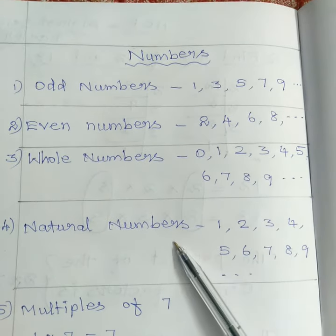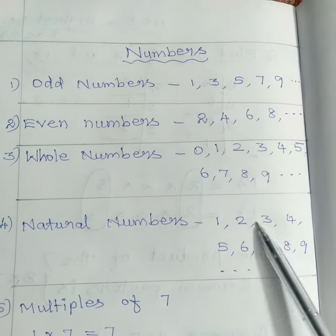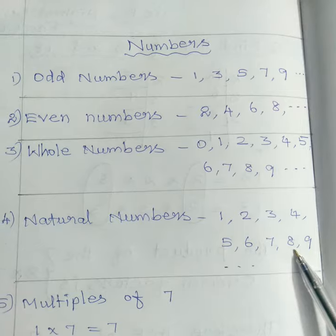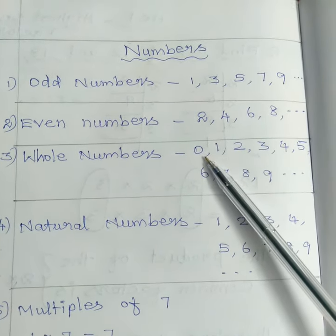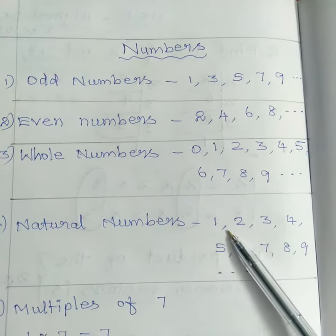Then natural numbers. Natural numbers are starting from 1, 2, 3, 4, 5, 6. Understood? Whole number starting from 0. The natural numbers are starting from 1.